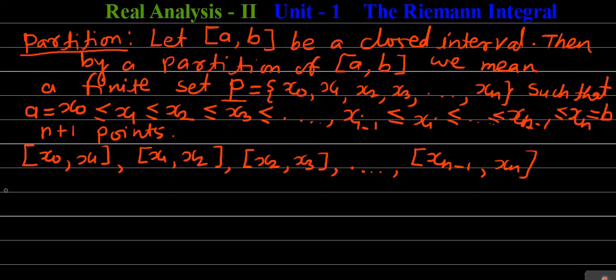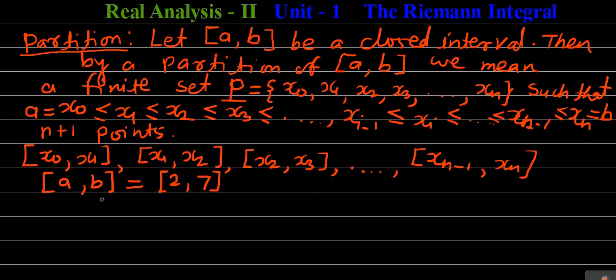Now let us see one or two examples of partition. For example, let us suppose that closed interval [a, b] is equal to the closed interval [2, 7]. Any such interval can be considered as per our convenience. Let us consider some sets and we will check which one of them are partitions of interval [2, 7] and which are not. So, let P1 = {2, 2.4, 3, 3.9, 5, 7}.